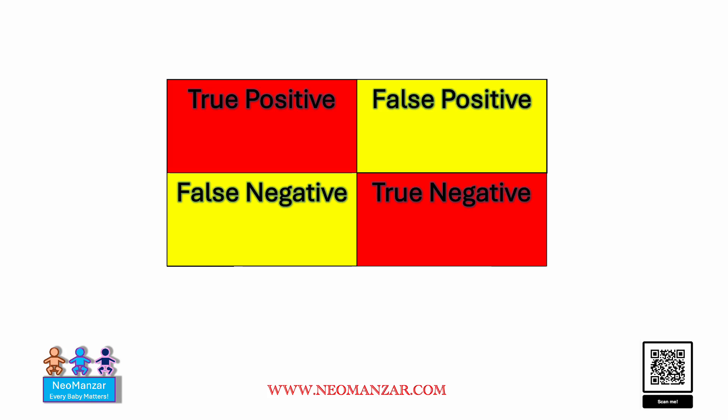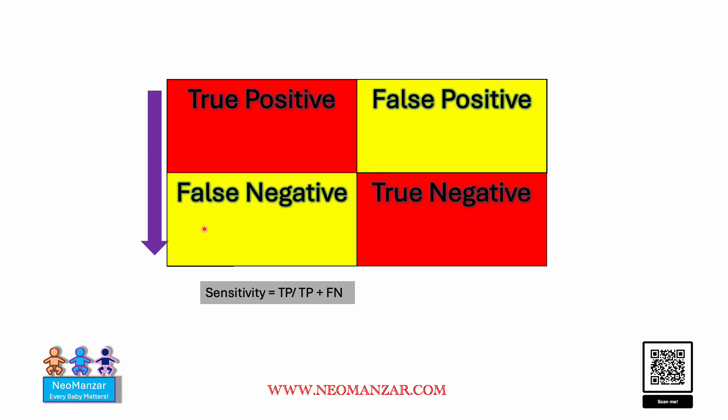Hello everyone. A simple tip about remembering the sensitivity formula and the specificity formula, and how false positive and false negative affect these indices. An easy way to remember is that sensitivity is true positive divided by true positive plus false negative.